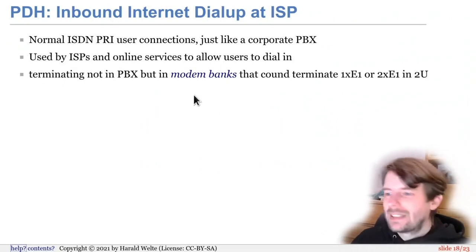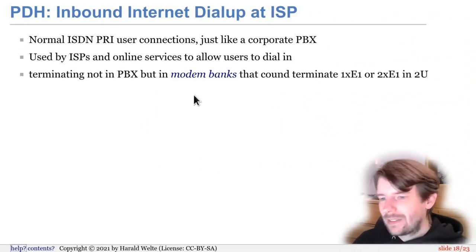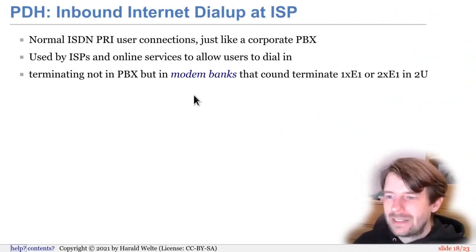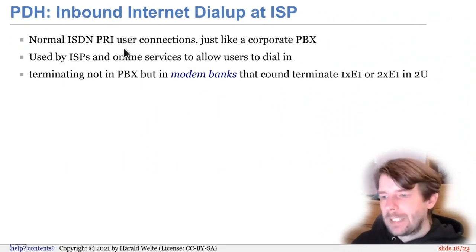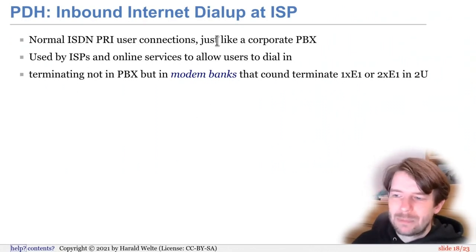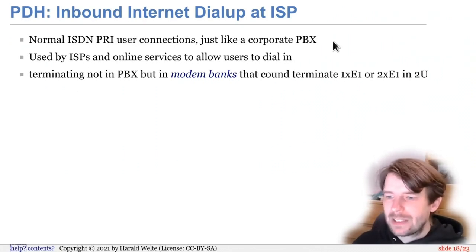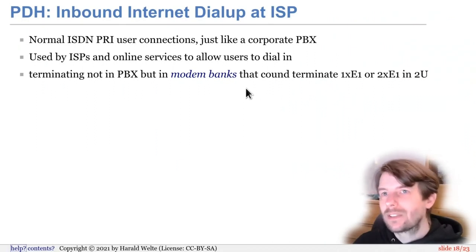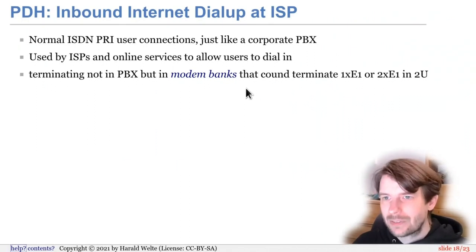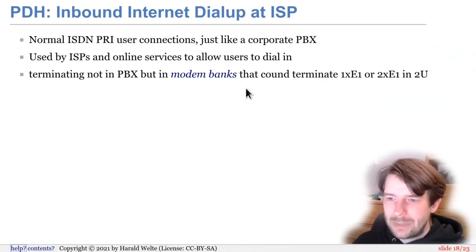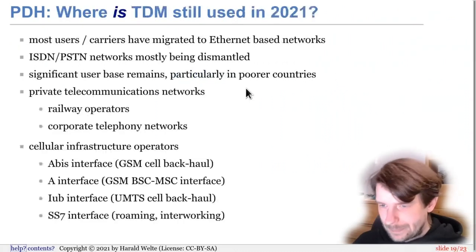Furthermore, inbound internet dial-up as an ISP: if you were an ISP in the 90s, you would get many E1 lines or even higher-order multiplexes, and instead of connecting a PBX, you would connect modem banks to terminate these E1 lines — each with 30 inbound subscribers dialing into your internet service provider. That's yet another use case where PDH technology was used.